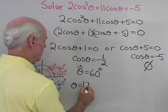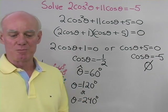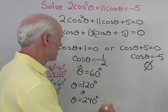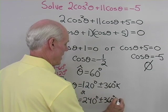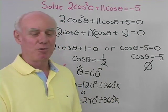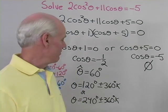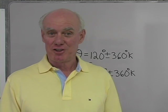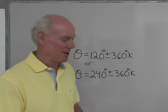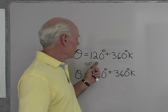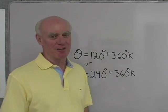Theta equals 120 degrees or theta equals 240 degrees — those are all solutions between 0 and 360 degrees. For all solutions, we add plus 360 degrees times k. To clarify: the correct general form is 120 plus 360k and 240 plus 360k, where k is an integer. We're not writing plus or minus — just the plus. Those are all solutions to that equation.